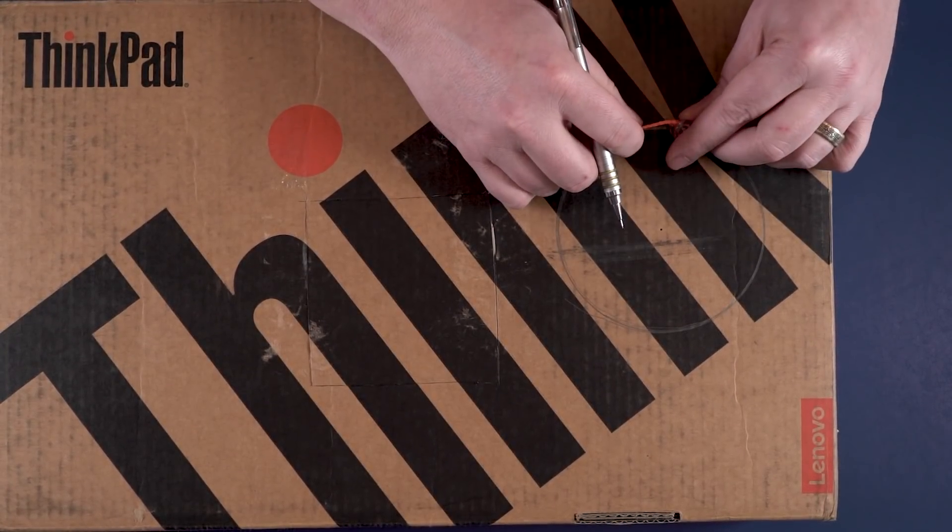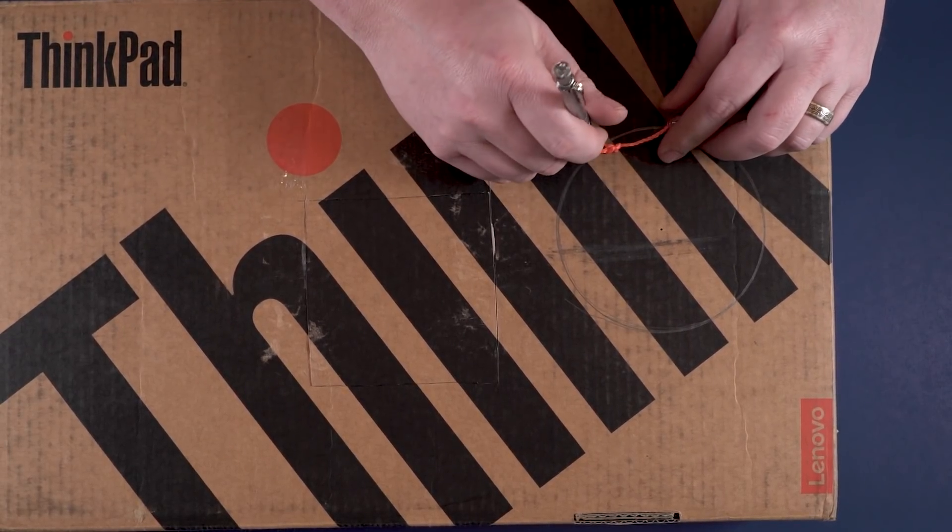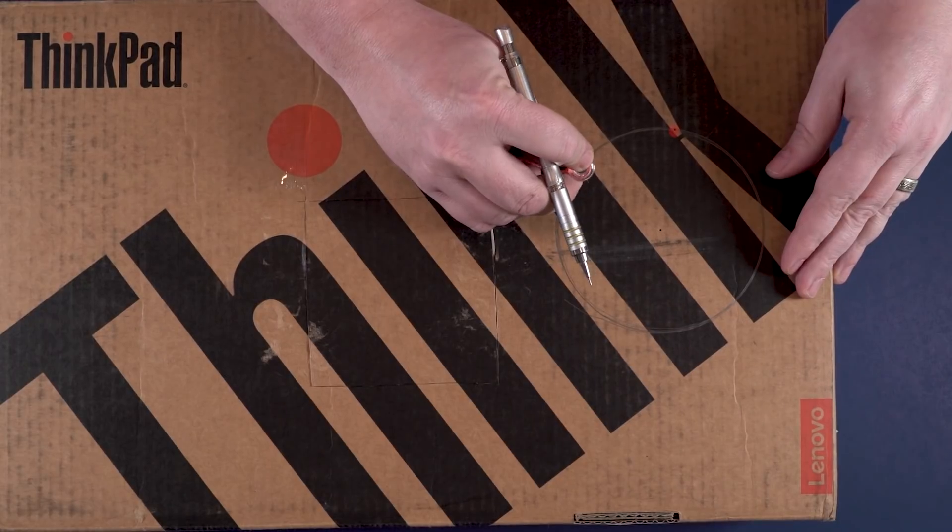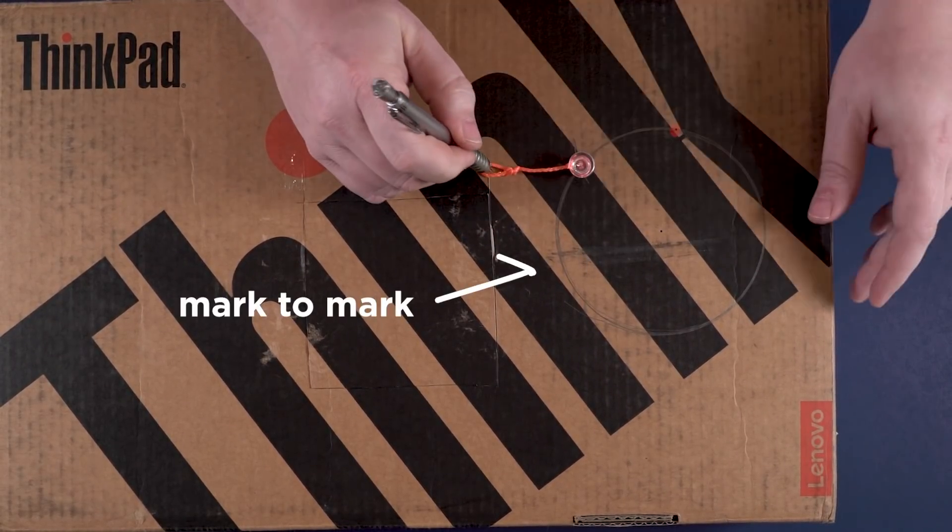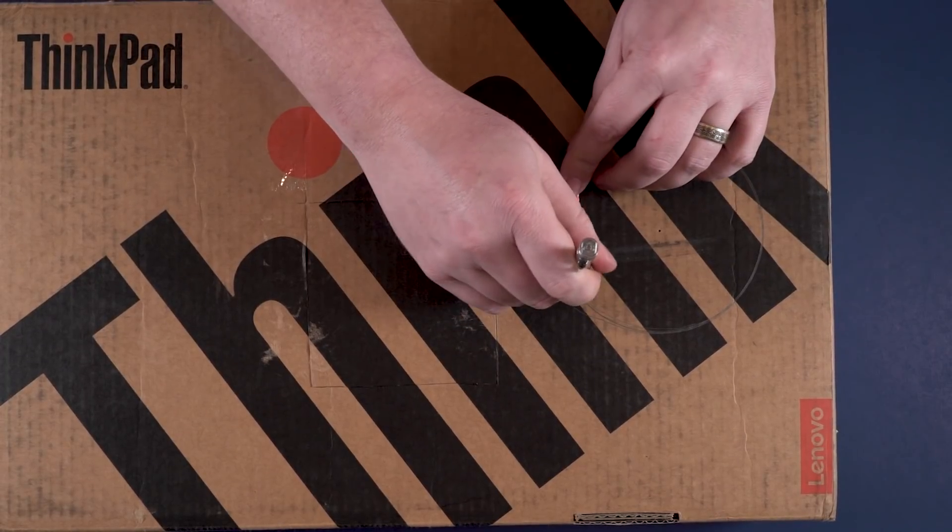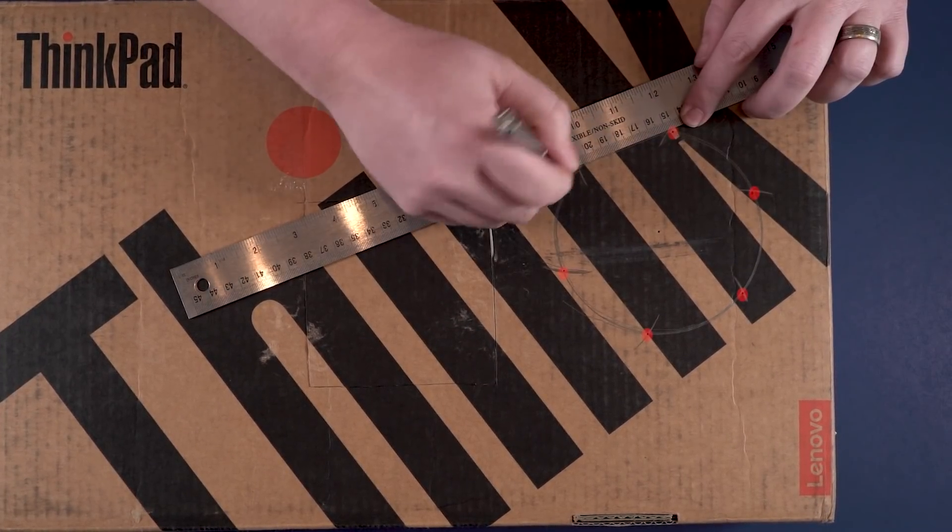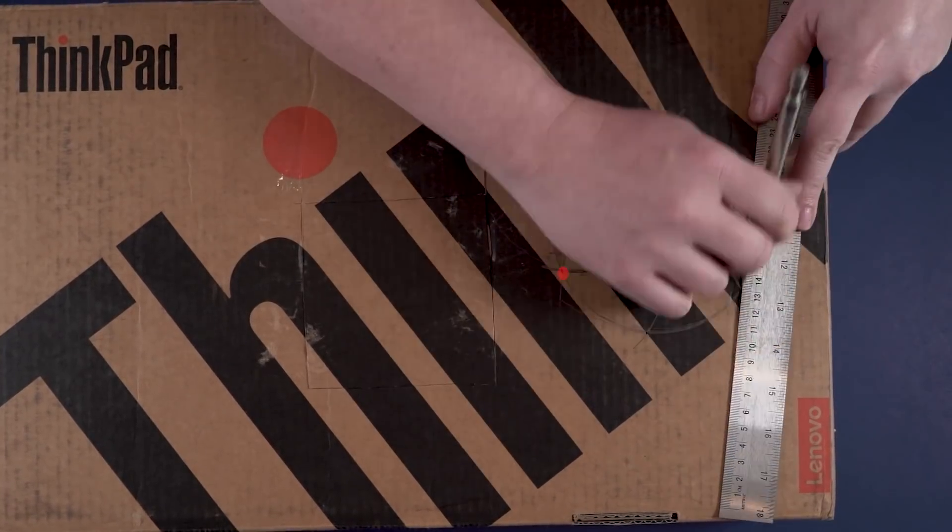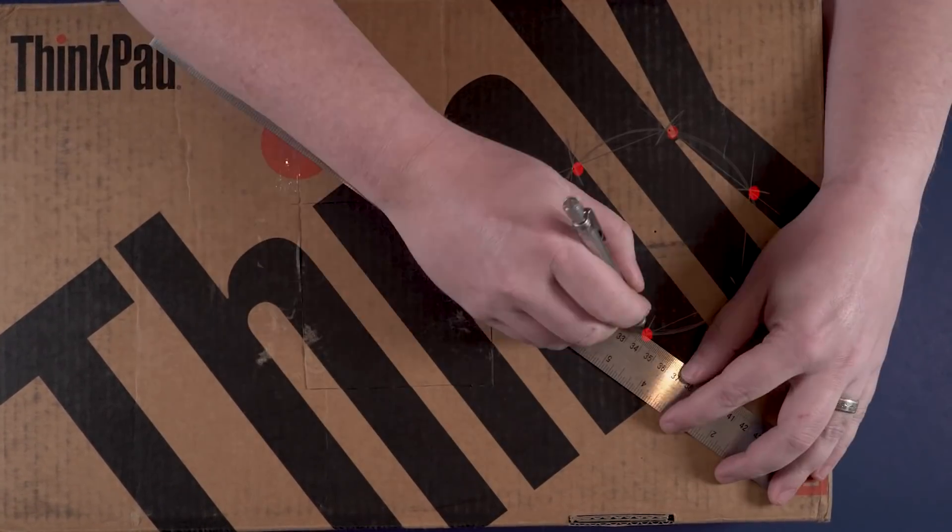I'm going to take my push pin and put it at a spot on the hexagon, then put my push pin into another spot and go from mark to mark. I'm going to take my straight edge and go from mark to mark.